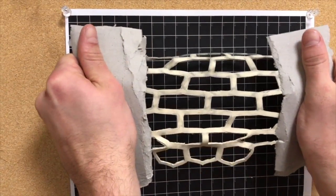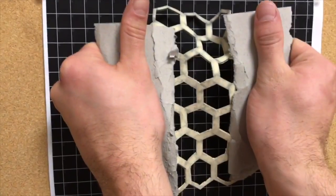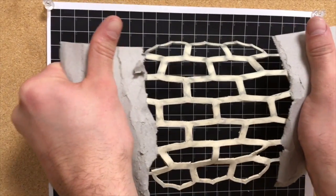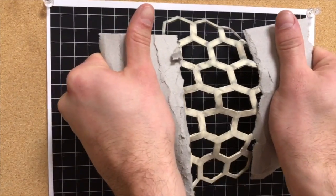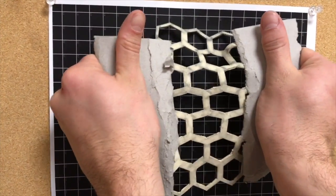This is an example of a positive Poisson's Ratio material. As you can see, when the material is pulled axially, the hexagons flatten down and the sheet's lateral dimension is decreased.